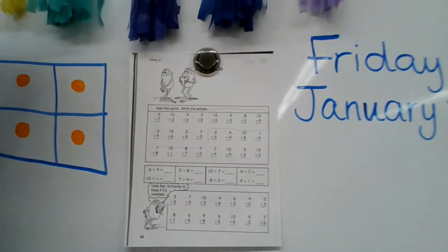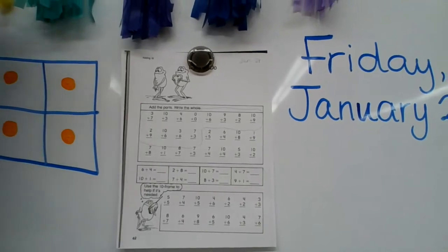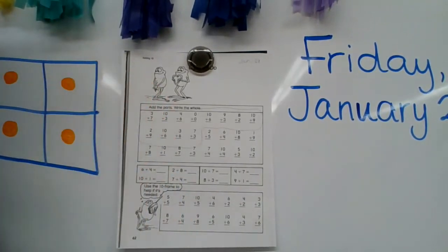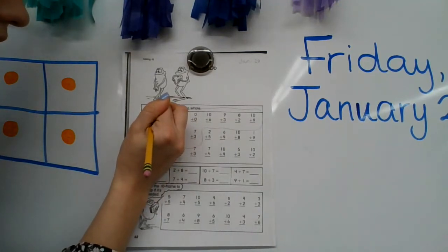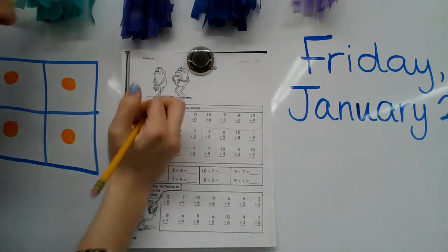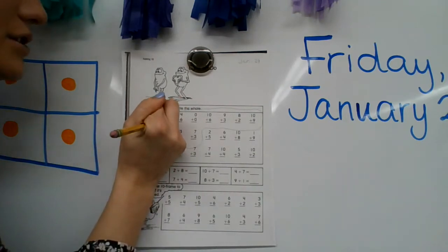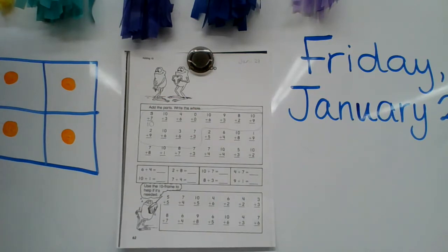Otherwise, you can just count up too. You can do touch points. So if I do seven plus three, I can say seven, eight, nine, 10. Or I could say seven, eight, nine, 10 and count those touch points on the number three. Any way you want to do it, your answer is going to be 10.